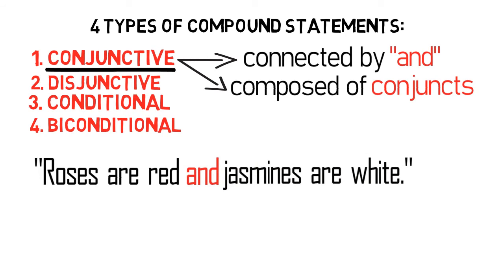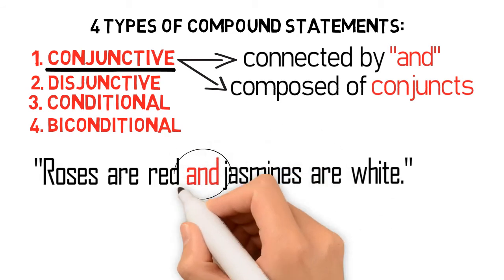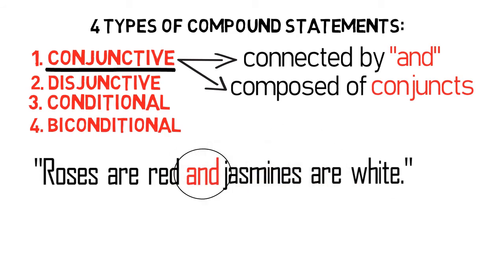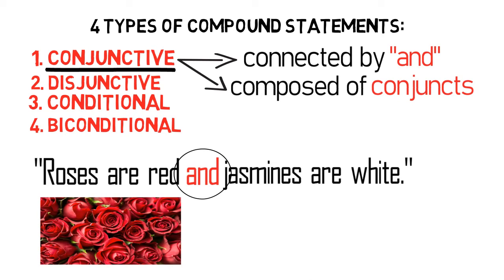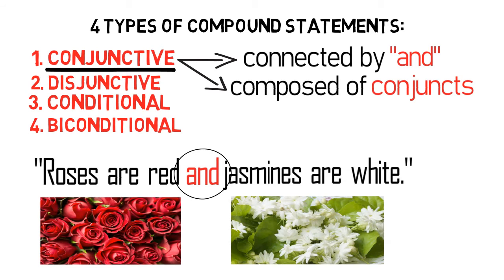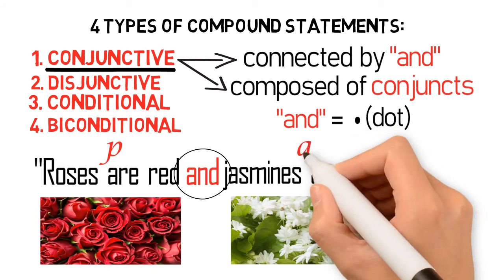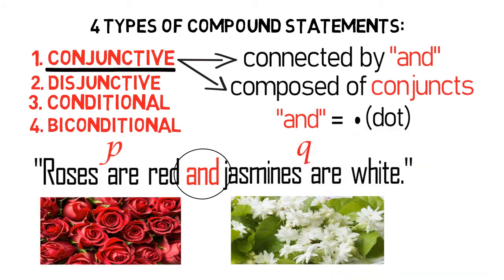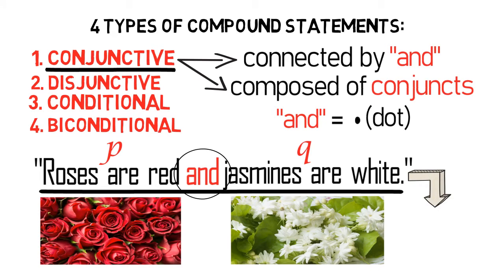Obviously, this statement is a conjunction because it is connected by the word 'and'. The first statement, 'roses are red', is the first conjunct, and the statement 'jasmines are white' is the second conjunct. The symbol for 'and' is a dot. So if we let P stand for 'roses are red' and Q for 'jasmines are white', then the statement is symbolized as P · Q.